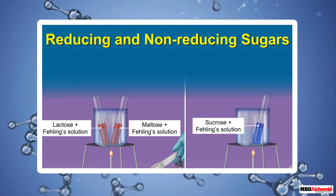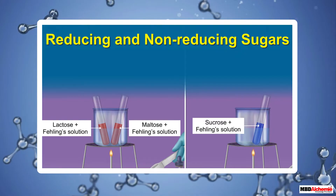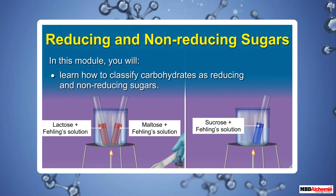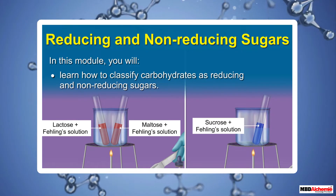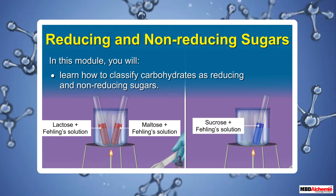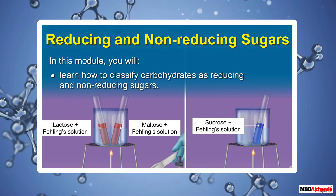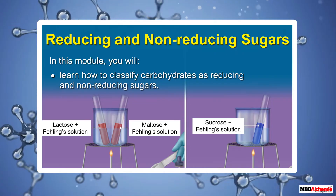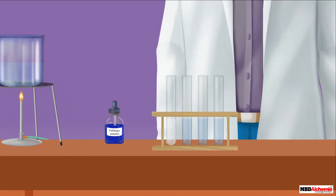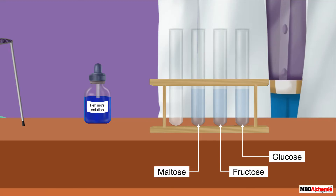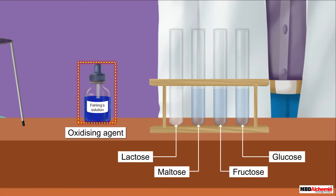In this module on reducing and non-reducing sugars, you will learn how to classify carbohydrates as reducing and non-reducing sugars. Let us begin our study by considering the reaction of common carbohydrates with an oxidizing agent like Fehling's solution, which is a blue liquid.